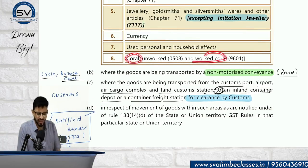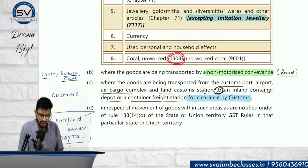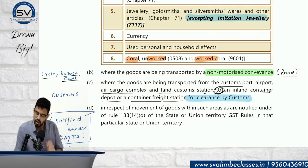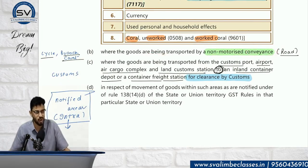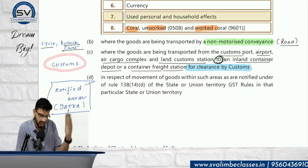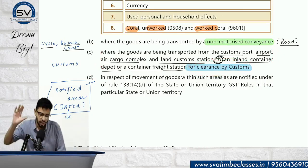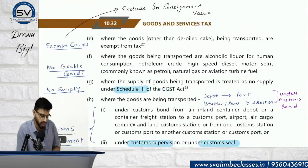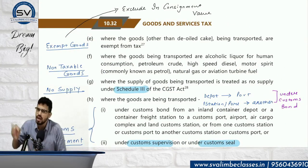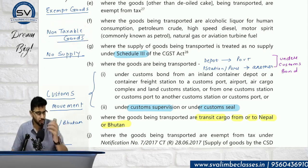Continuing exemptions from e-way bill: jewelry, goldsmith and silversmith wares — same reason as precious items; but imitation jewelry requires e-way bill if value exceeds ₹50,000. Currency — obvious reasons, ATM cash loading runs into lakhs so no e-way bill. Unworked and worked coral. Goods transported by non-motorized conveyance like a cycle or bullock cart — no motor means no e-way bill. Movement under customs-related clearance between customs areas. Notified areas — currently none notified. Exempt goods — only exempt goods being transported means no consignment value check and no e-way bill required.